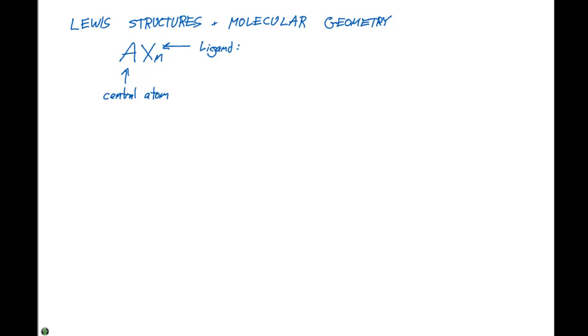And a ligand is any atom or ion bonded to the central atom. And in the formulas we'll look at in this class, N can range anywhere from one, where we have a linear molecule, all the way up to six where we have an octahedral molecule, and it can be any number in between.